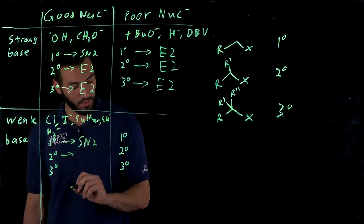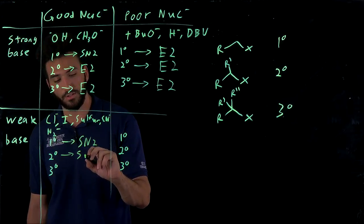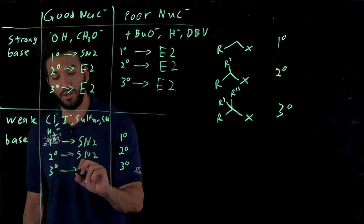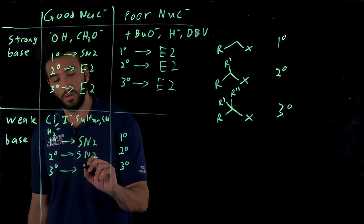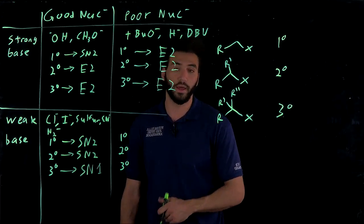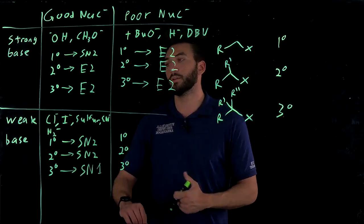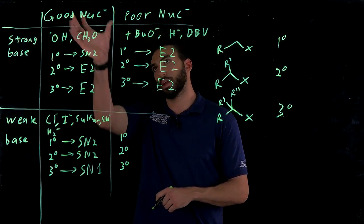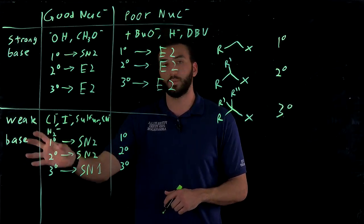If we have a secondary, it's going to go through an SN2 reaction as well. And if we have tertiary, it's going to go through SN1. SN1 because we have a very, very stable carbocation intermediate. Tertiary, and this happens because, again, nucleophile and weak base.